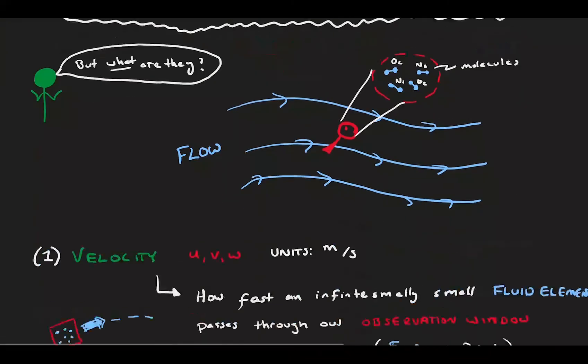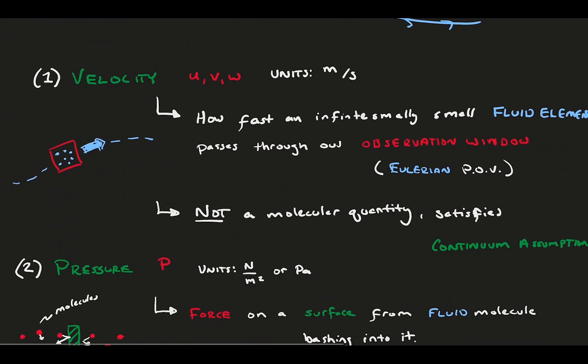We end up having to consider the flow both macroscopically and microscopically, to properly understand the variable roots. We covered the fluid velocity, or the general motion of a group of molecules.